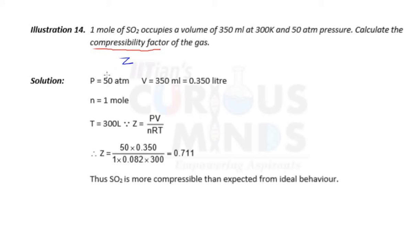Students, an important concept here. Z is always PV by nRT. Real gases actually do not obey the ideal nature. But for ideal gases, Z value is 1. If you equate this Z as 1, then 1 equals PV by nRT.